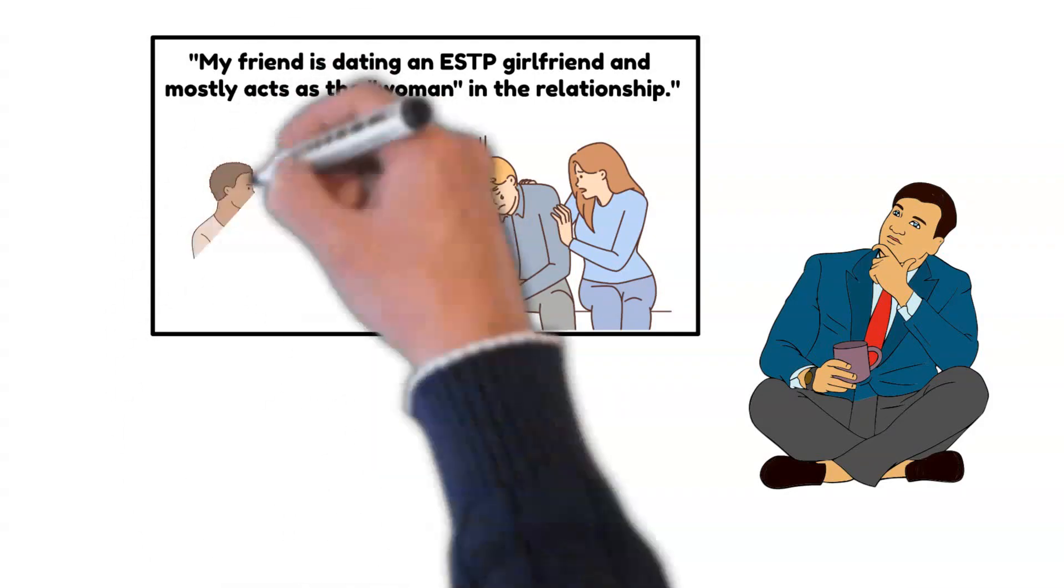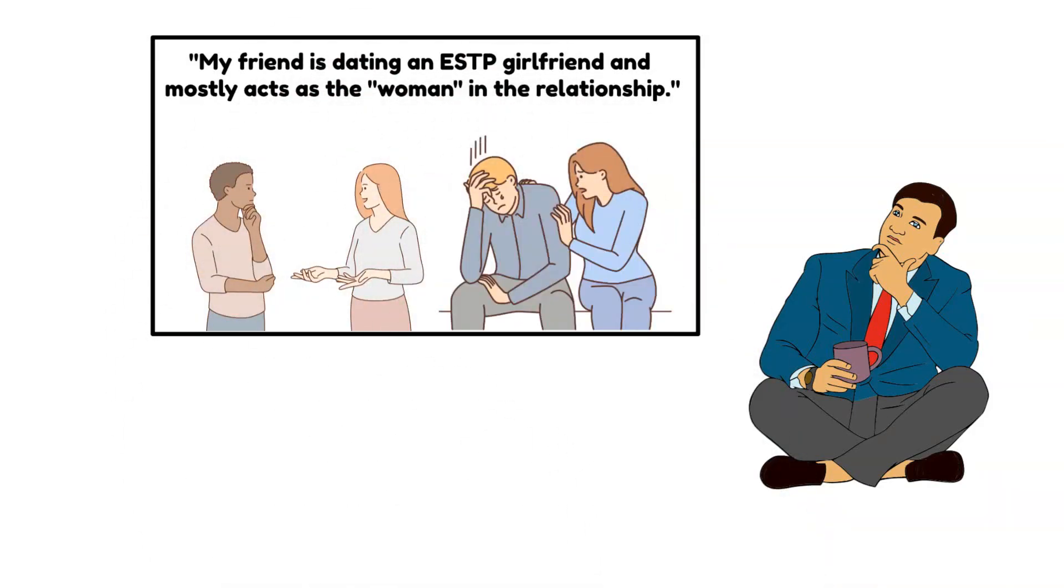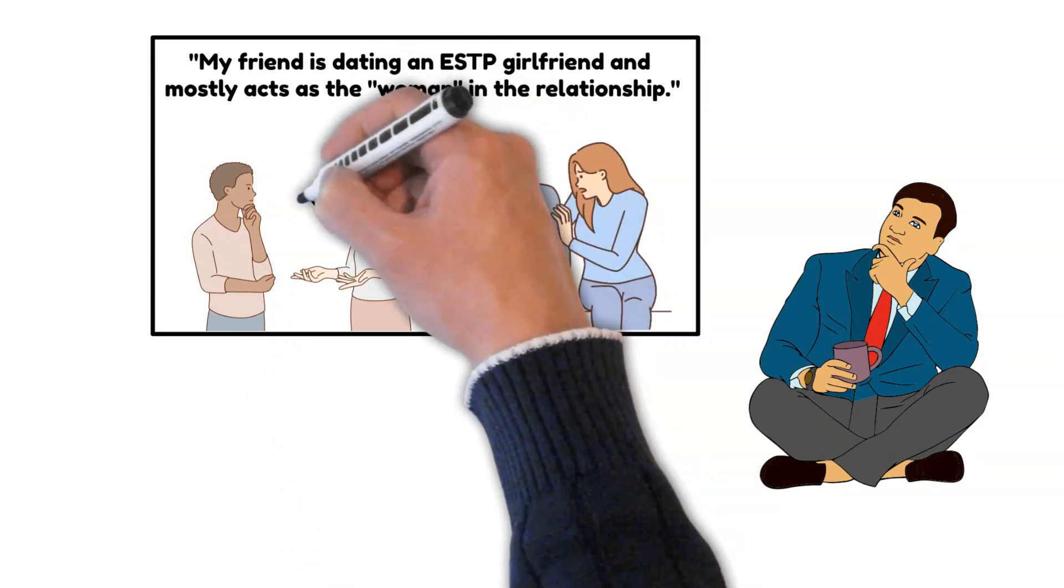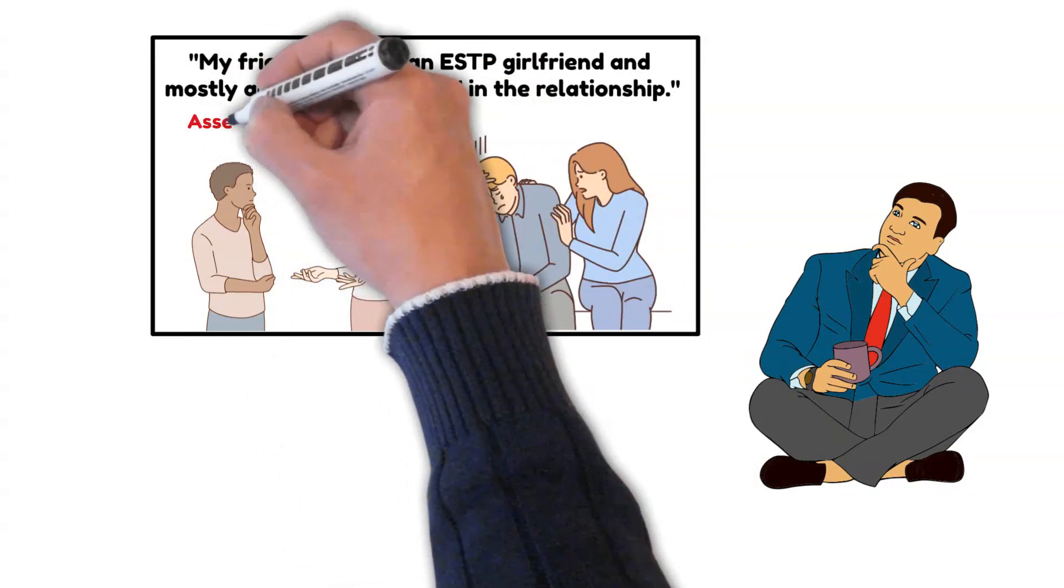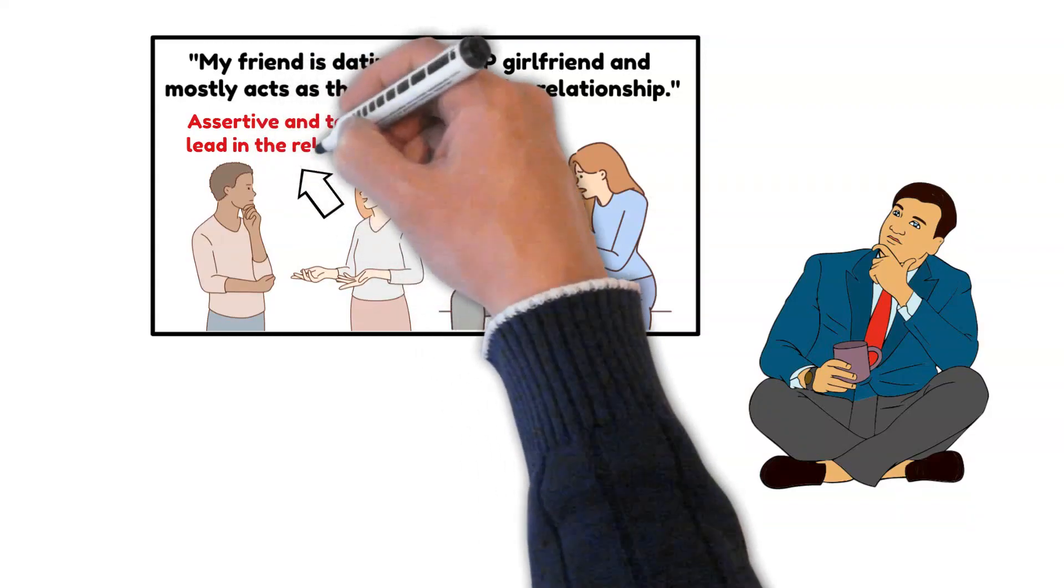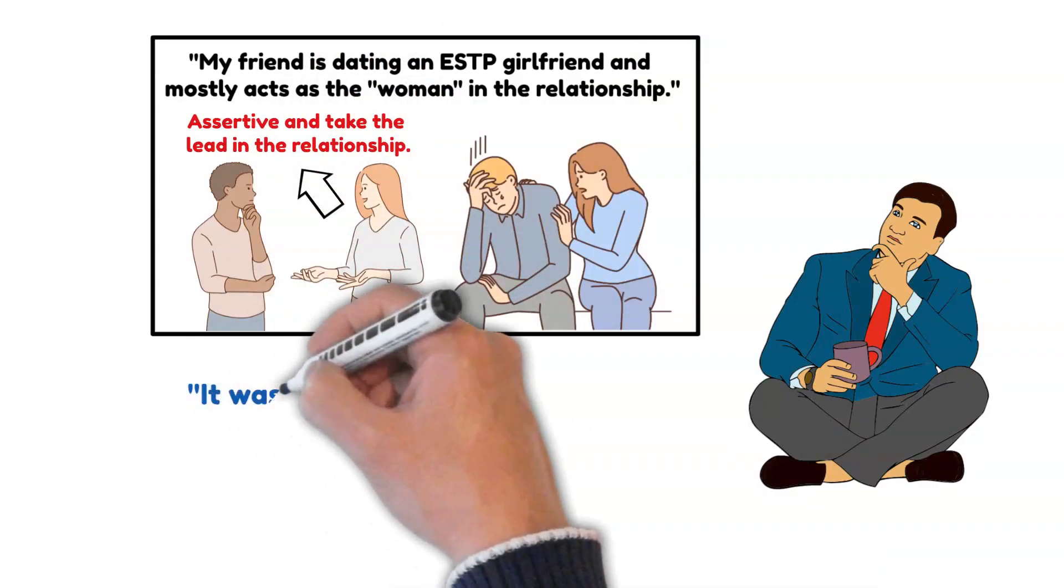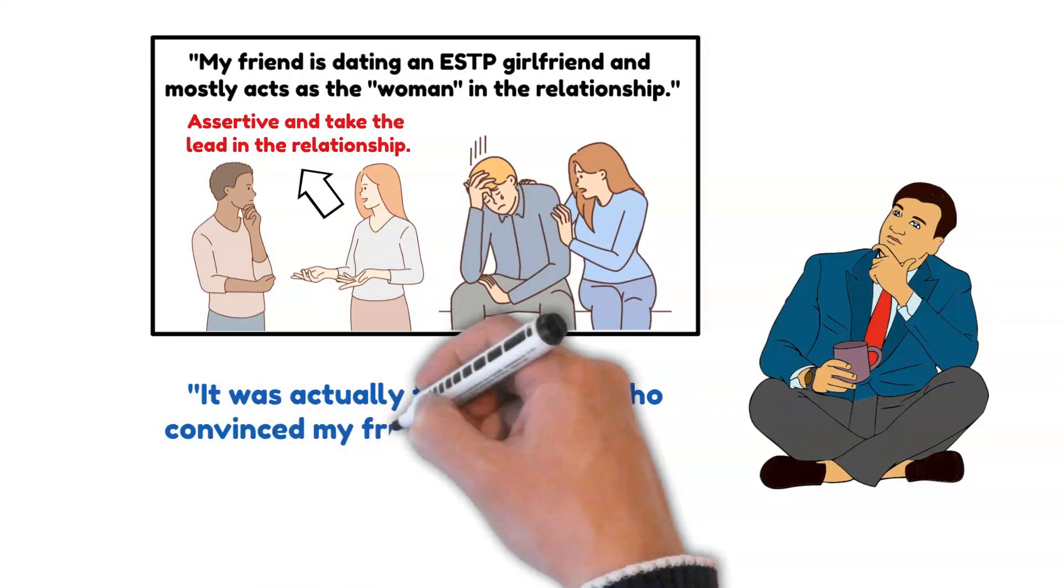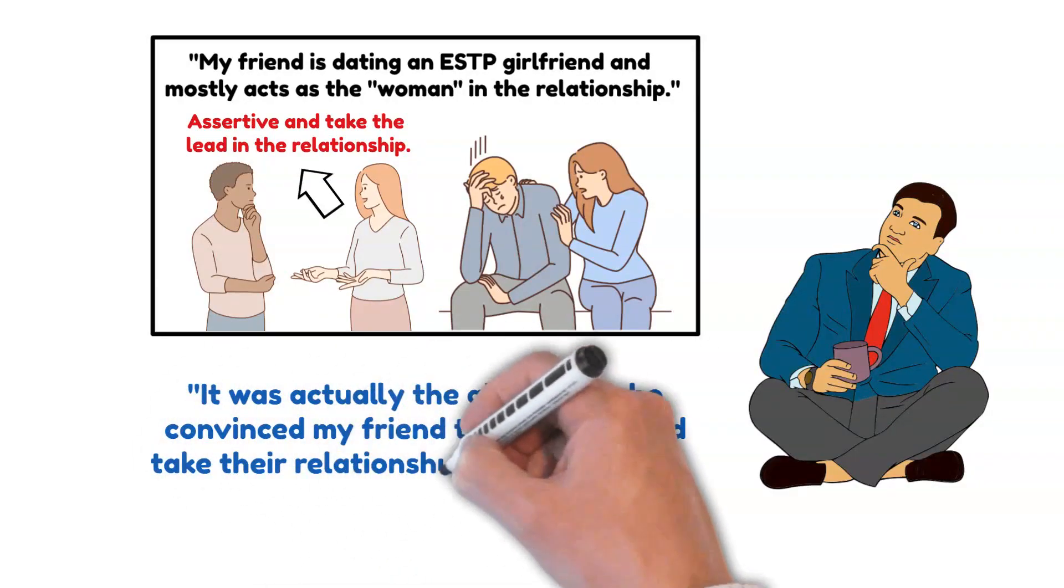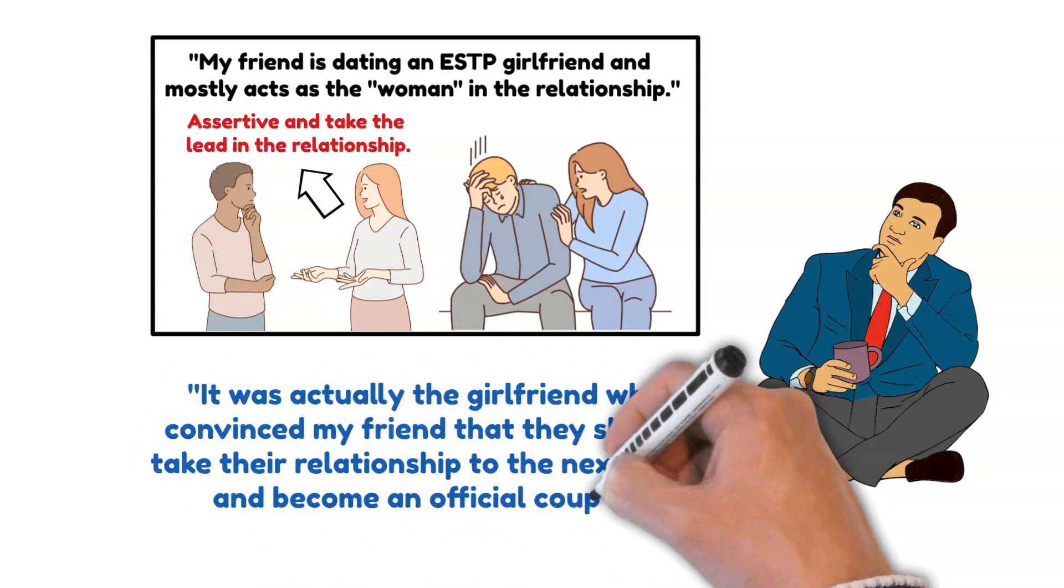When it comes to decision making, he turns to his girlfriend for input and guidance. On the other hand, his girlfriend exhibits a greater level of assertiveness and takes the lead in their relationship. It's worth noting that it was actually the girlfriend who convinced my friend that they should take the relationship to the next level and become an official couple.